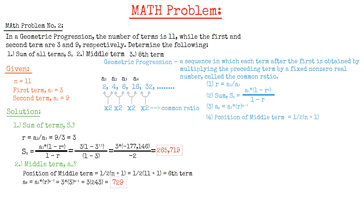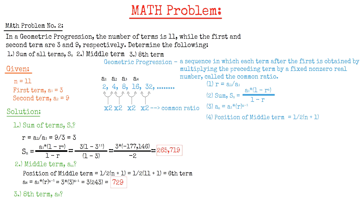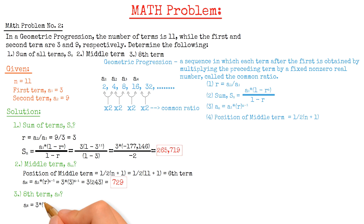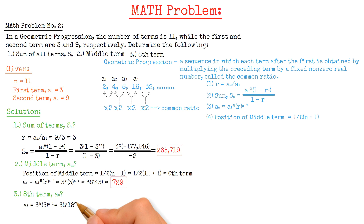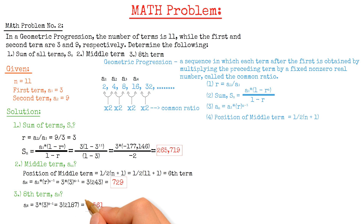Moving on to the last question, that is to find the 8th term. We have A8 equals the first term 3 multiplied by the common ratio 3 raised to the power of 8 minus 1, and that gives us a value of 6,561.